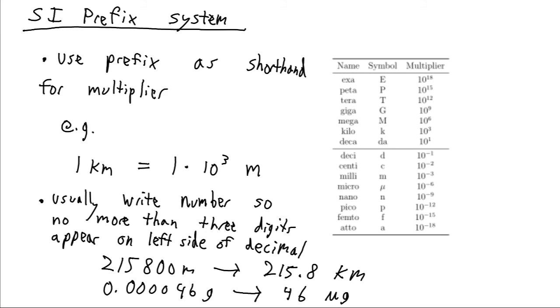And if we do that, if we multiply 10 to the minus six times this number, we will get this number over here. So the numbers are equal, but it might be more convenient to write this 46 micrograms all the time, rather than writing all these zeros and then 46 grams.